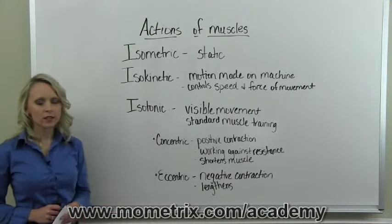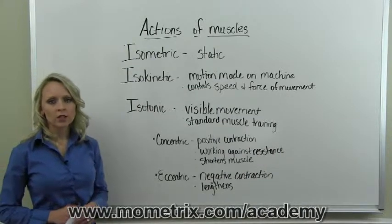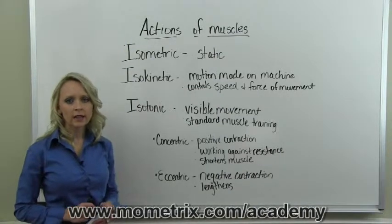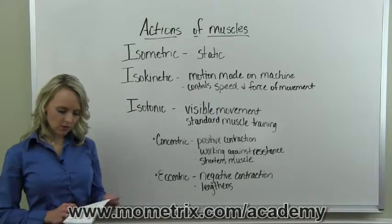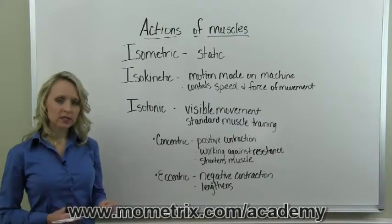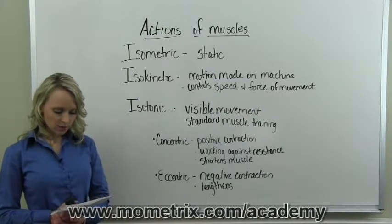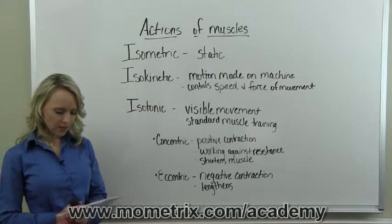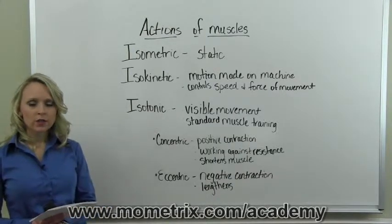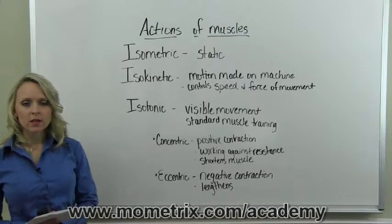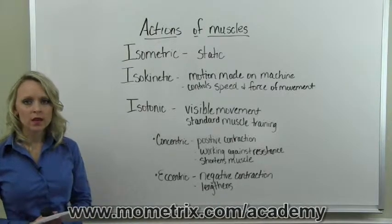Isometric action is a stable, unmoving action of the muscle. It is a static exercise, meaning the muscle and the joint do not move, and the muscle does not change length. Isometric exercise can strengthen the muscle, but only in the position that the exercise was held.